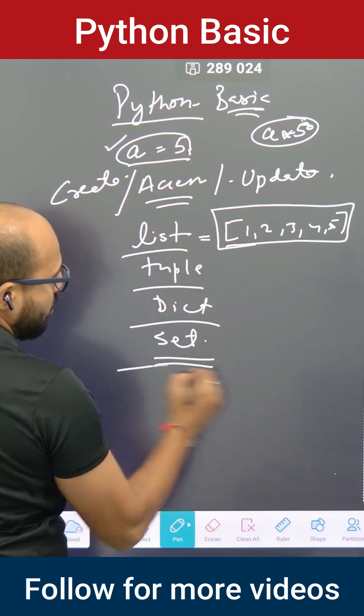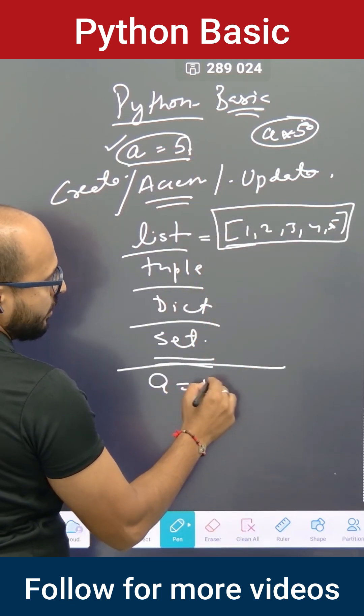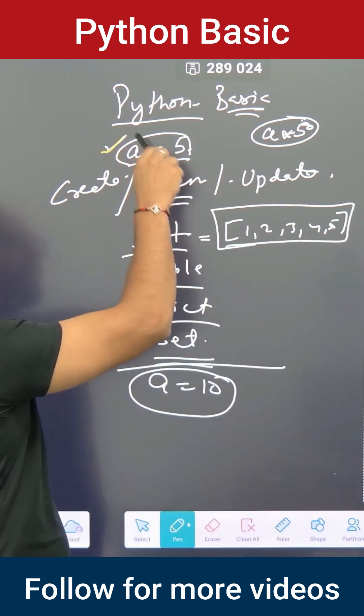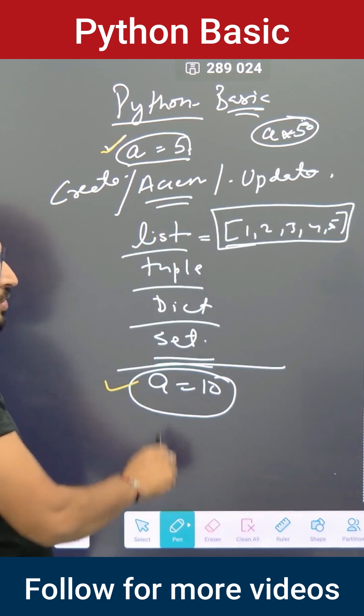And in future, I can update it also. Suppose in future I say a equals 10. So here when I'm saying a equals 10, then this previous a equals five is now updated to a equals 10.